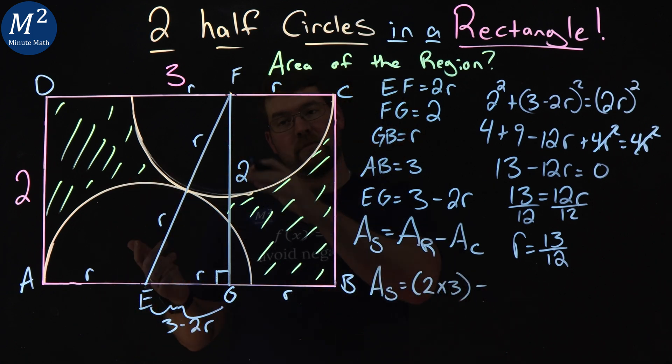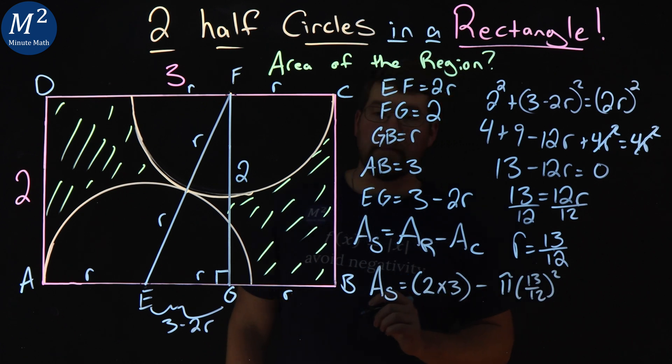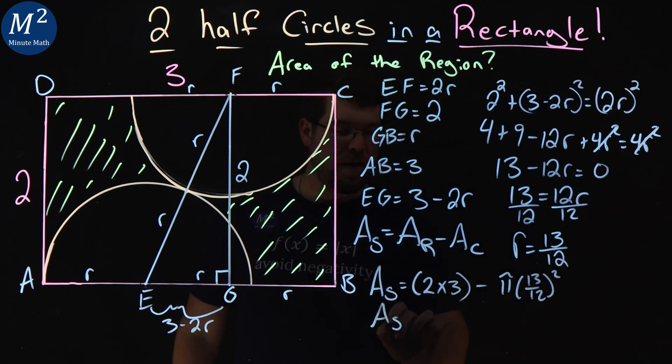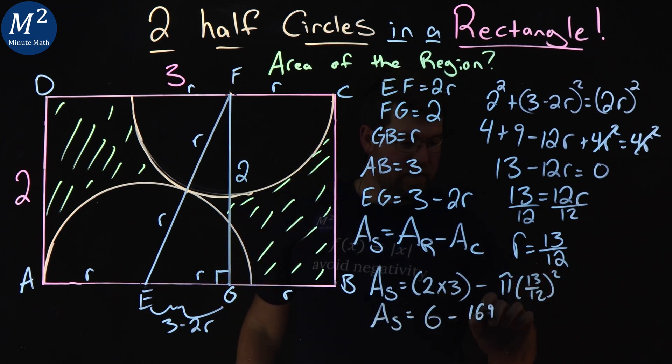The area of the circle, each half circle makes one full circle, is pi R, 13 over 12 squared. Simplify that. The area of the shaded region is 6 minus 13 squared, 169 over 12 squared is 144 pi units squared.